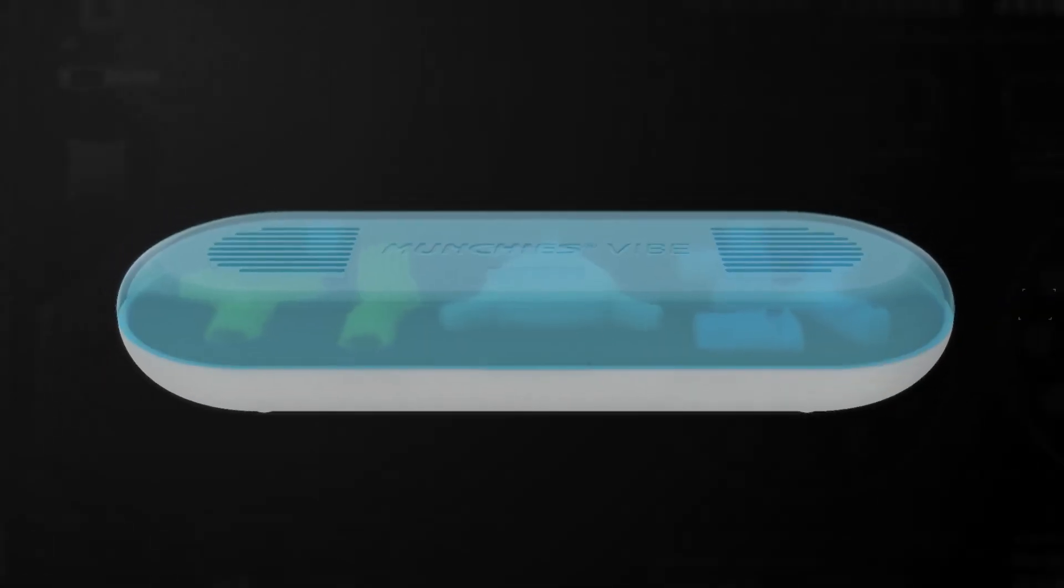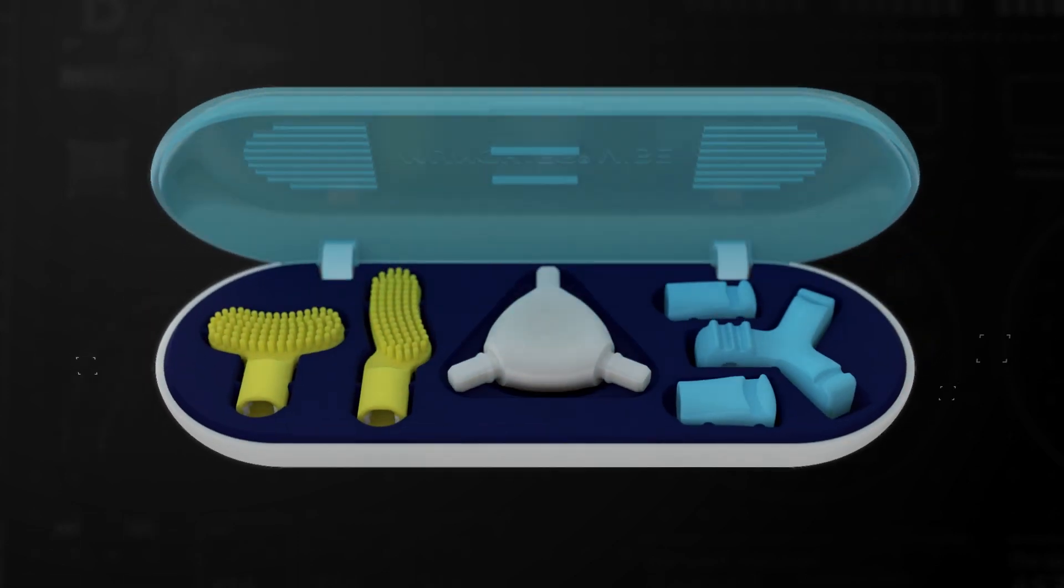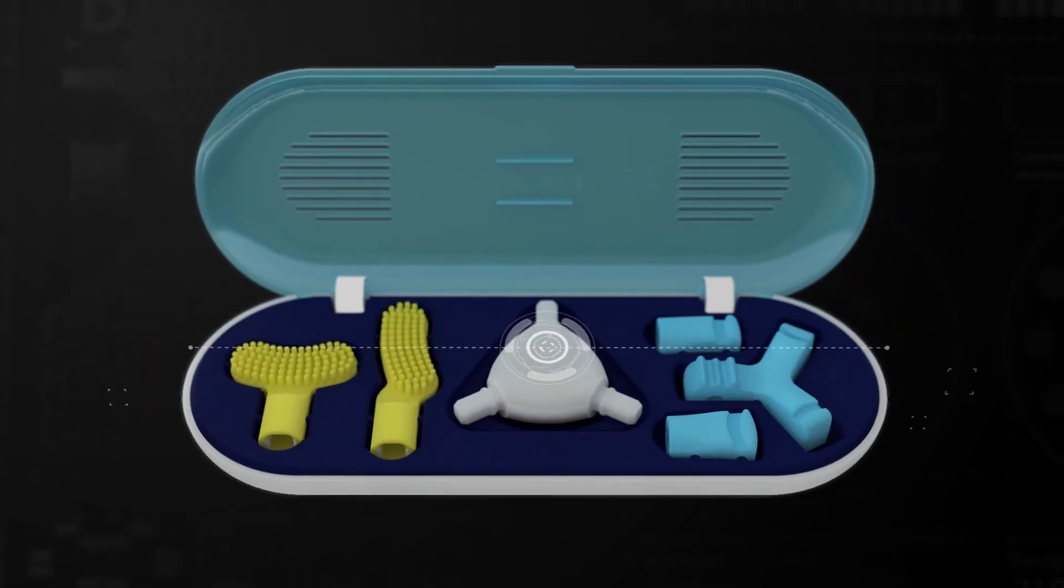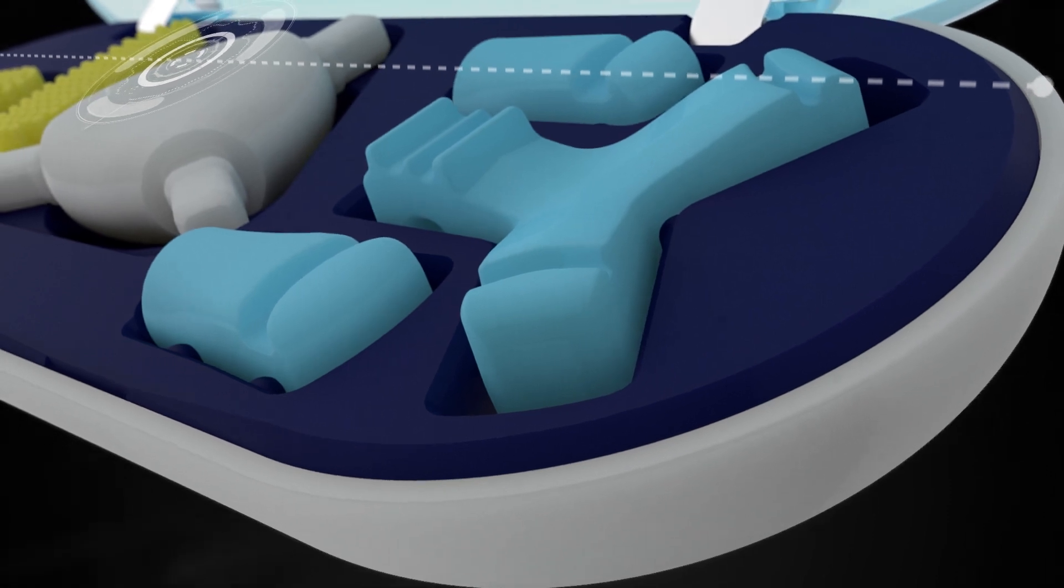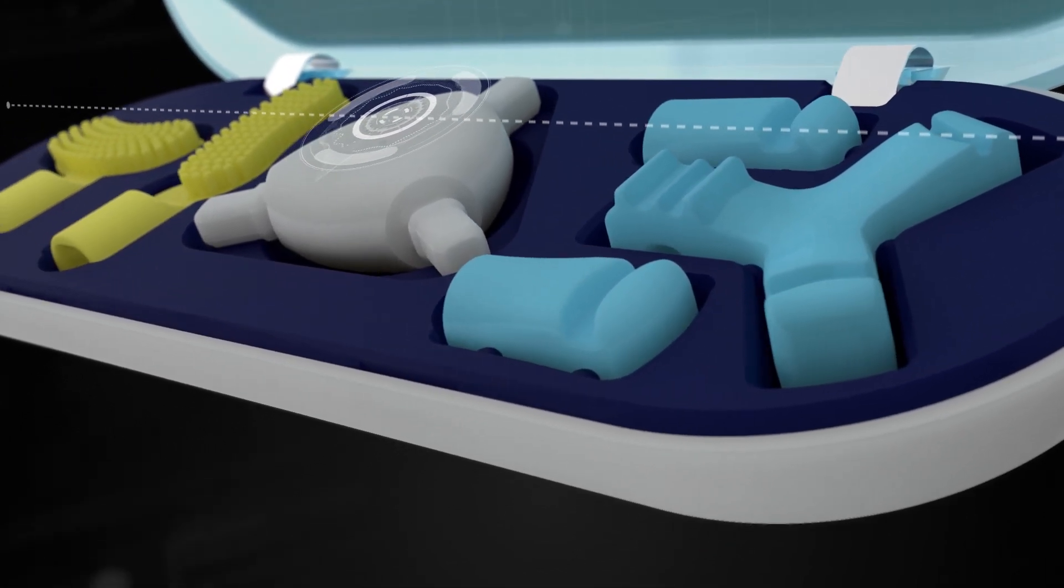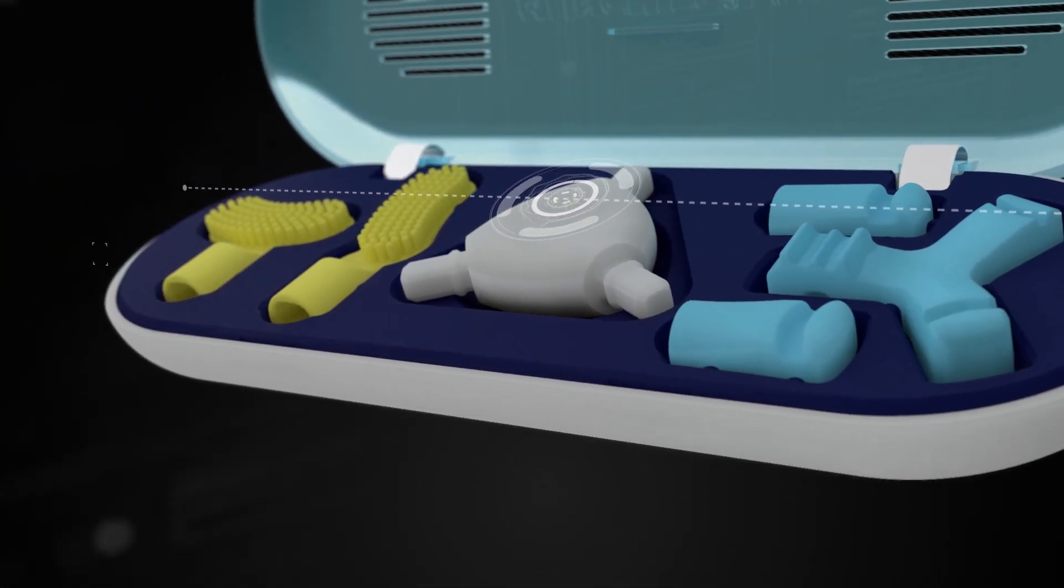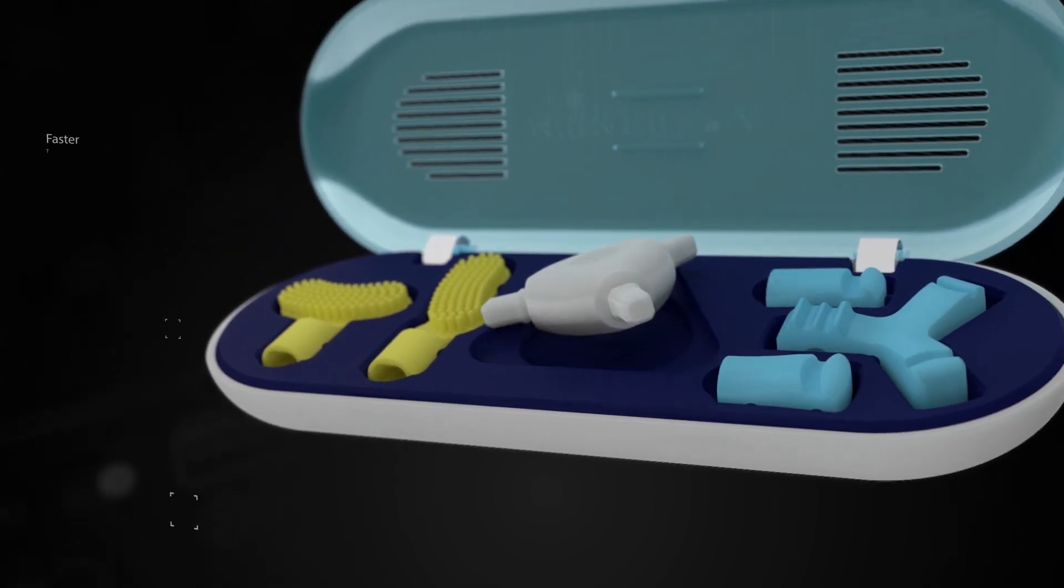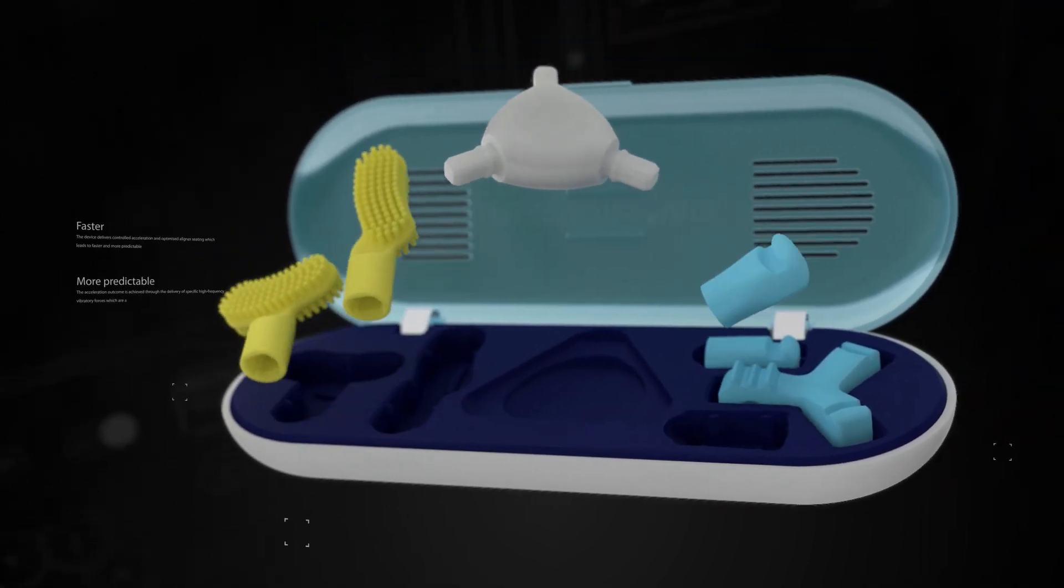Munchies Vibe has been created to rewrite the future of predictability in clear aligner therapy treatments. The device delivers controlled acceleration and optimized aligner seating which leads to faster and more predictable orthodontic movements.